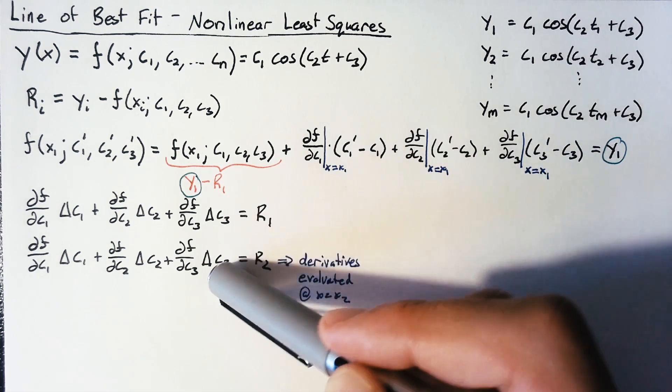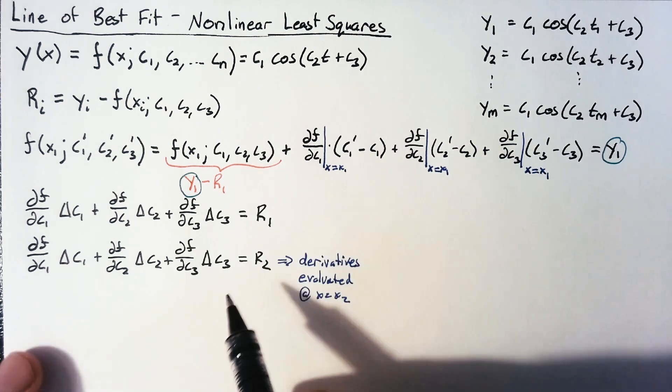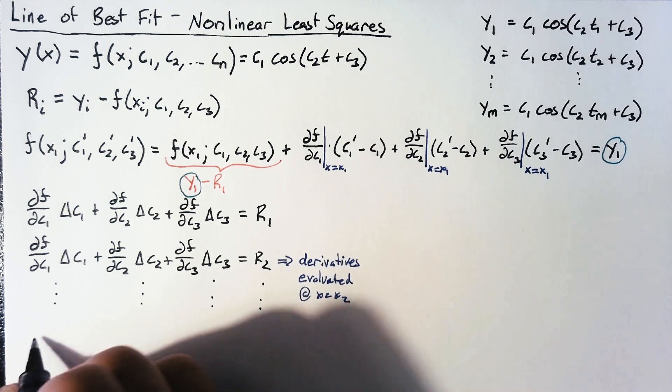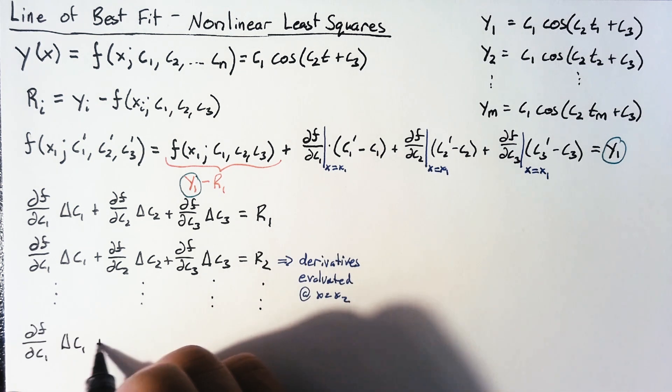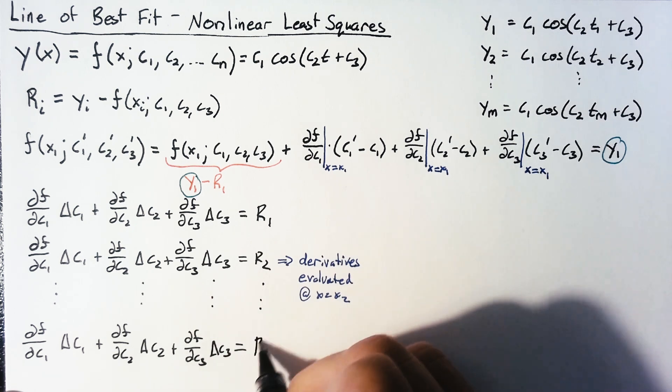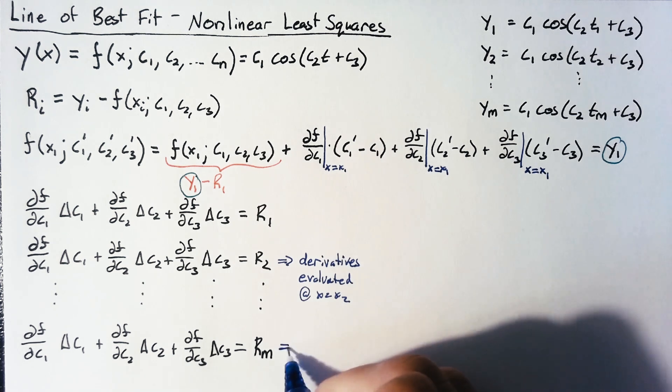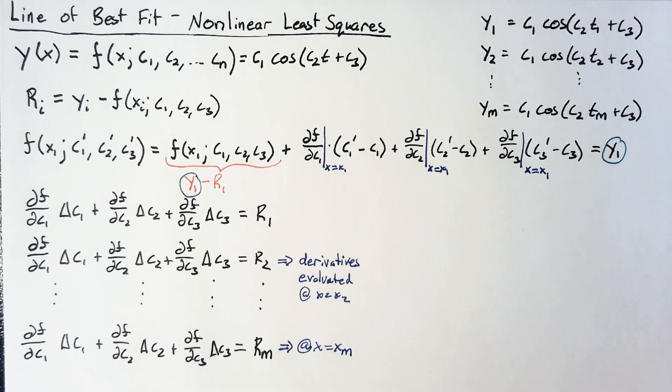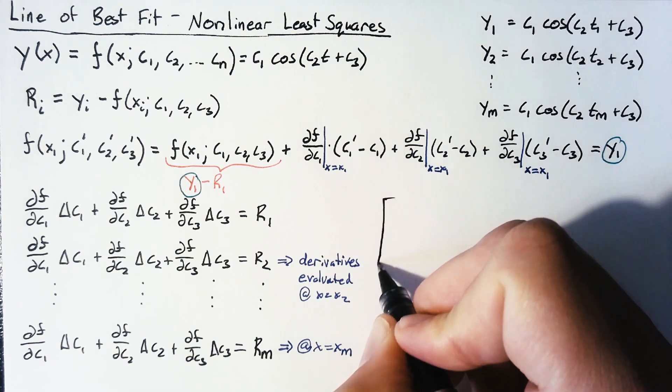Remember that these derivatives were calculated based on x equals x1, and this R1 is based on how far off our original guess was for x1. If we wanted to redo it for x2, the left-hand side would look pretty much the same, and the right-hand side would just be R2. But the important thing is that our derivatives are evaluated at x equals x2. We can write this out for however many points we have. At this point, we can actually write a linear system of equations based on these deltas rather than c1 directly. Our solution tells us how to change our parameters, not exactly what those parameters are.